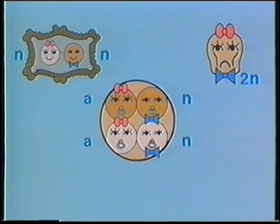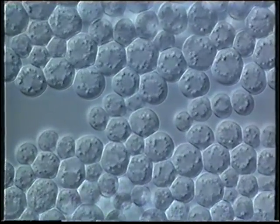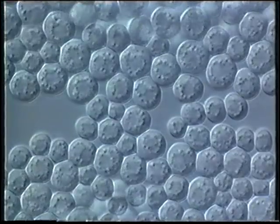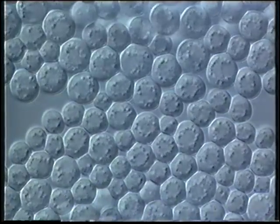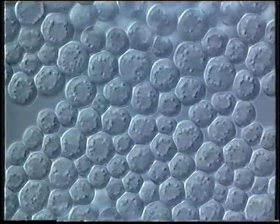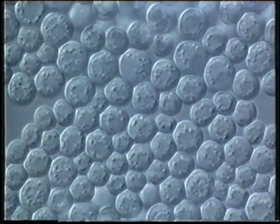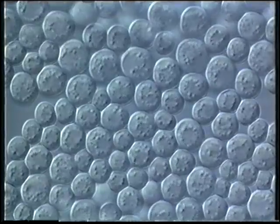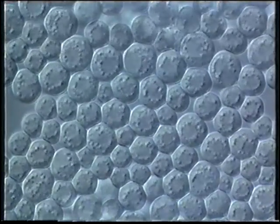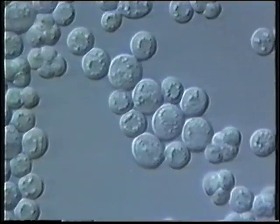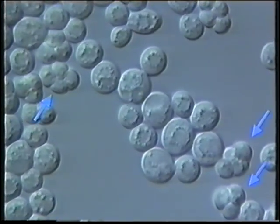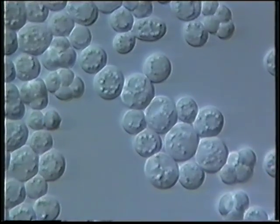Thus, two of the spores are A and two are alpha. These diploid cells have been fed acetate and starved for nitrogen. They look a little different, have accumulated lipid droplets and have stopped budding. They made a round of DNA synthesis and entered meiosis. In meiotic prophase, active genetic recombination takes place. The diploid cell converts to an ascus containing four haploid cells called ascospores.